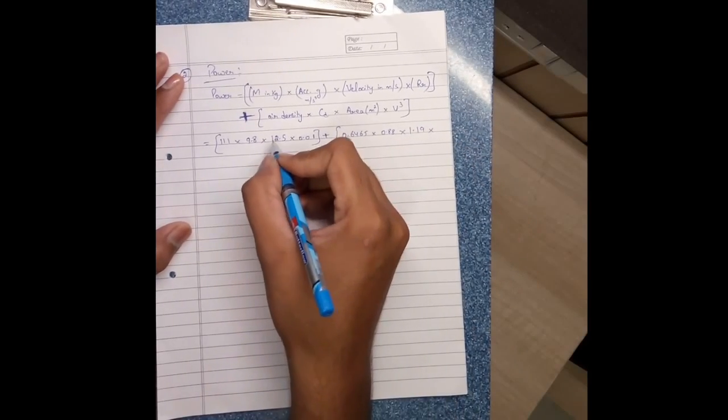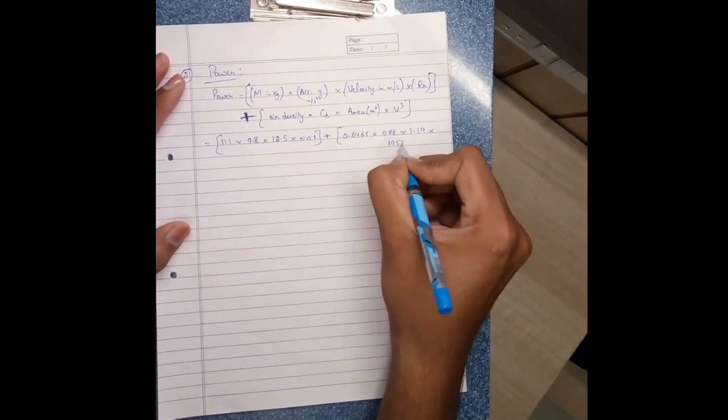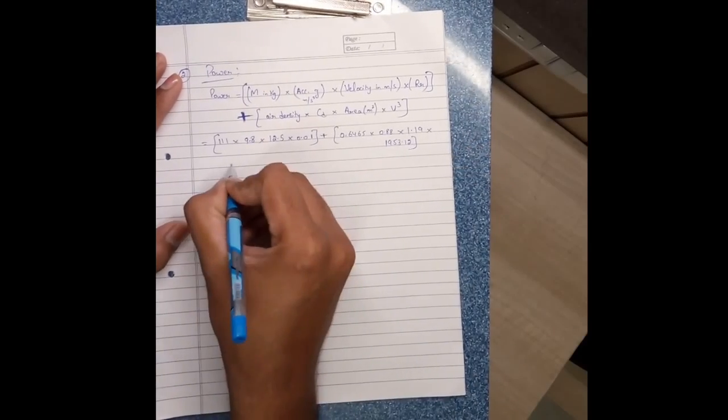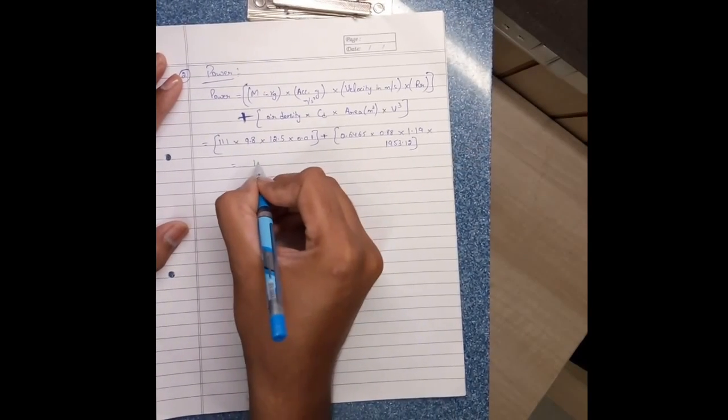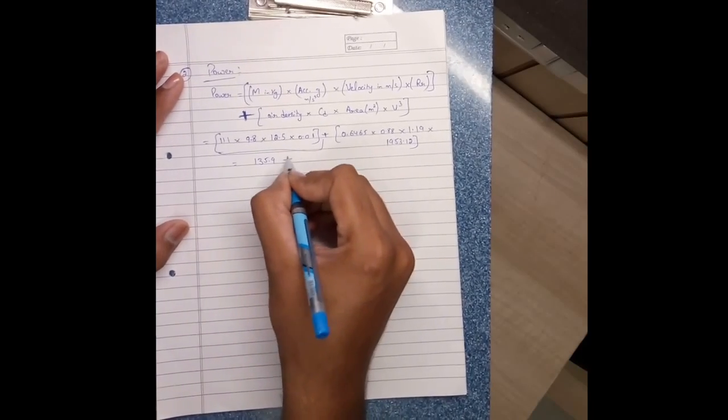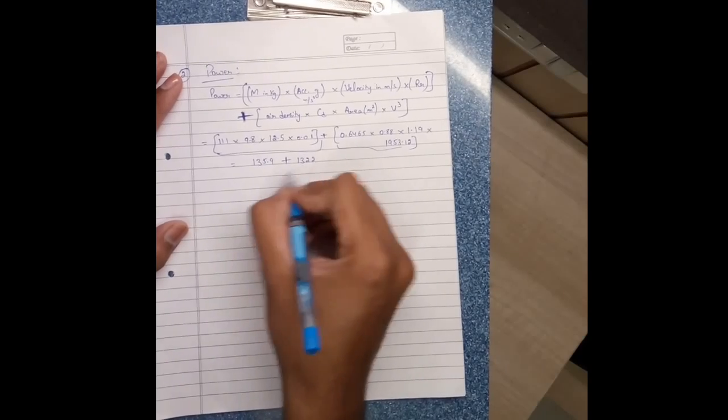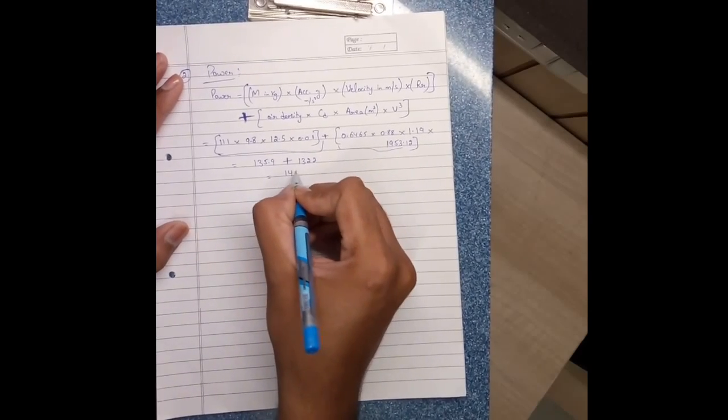...into velocity cube, that is cube of 12.5, 1953.12 becomes 1359. This plus 1322.